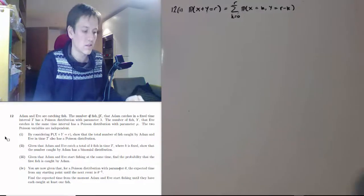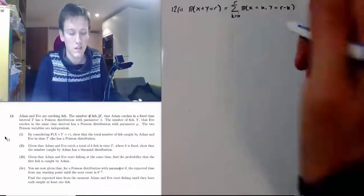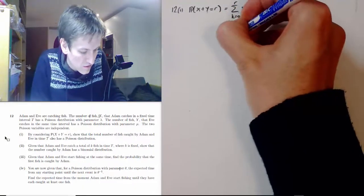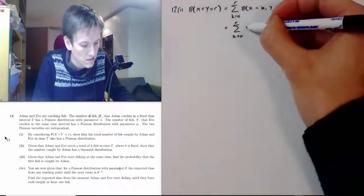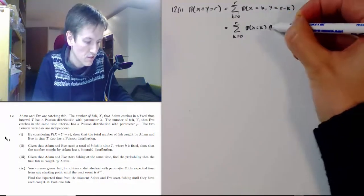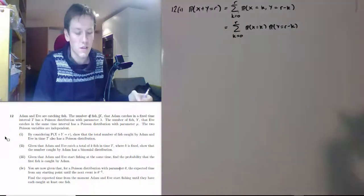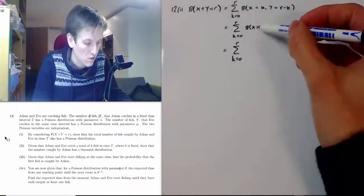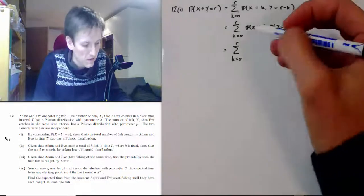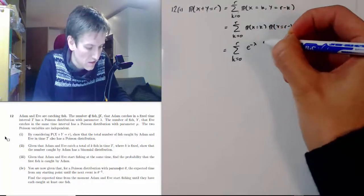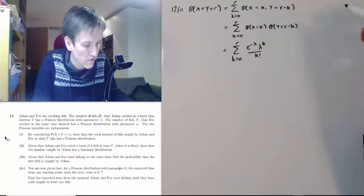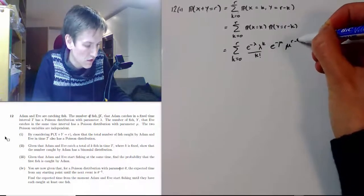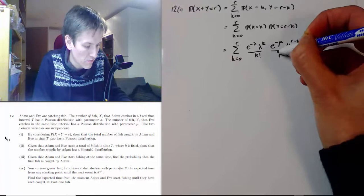Each term in the sum corresponds to one of those possibilities. Since X and Y are independent, the joint probability splits into the probability that X equals k times the probability that Y equals r minus k. Now substituting the Poisson PDFs: for X with rate lambda we get e to the minus lambda times lambda to the k divided by k factorial, and for Y with rate mu we get e to the minus mu times mu to the r minus k divided by (r minus k) factorial.